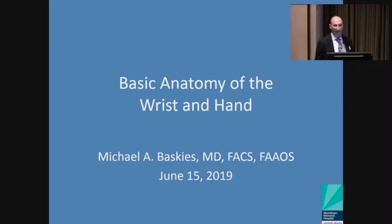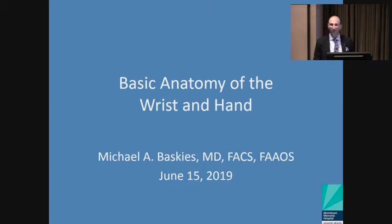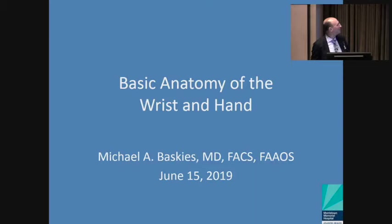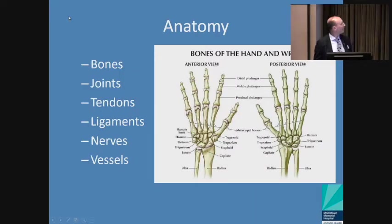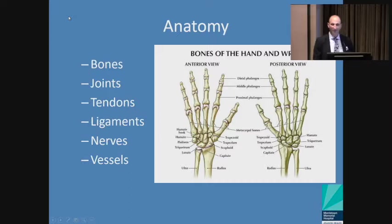First, we're going to fly through basic anatomy of the wrist and hand. This is something that's covered in volumes of textbooks, but we're going to do it in 10 minutes. When we talk about anatomy, we're talking about bones, joints, tendons, ligaments, nerves and vessels — you probably remember this from your first year anatomy course in medical school.